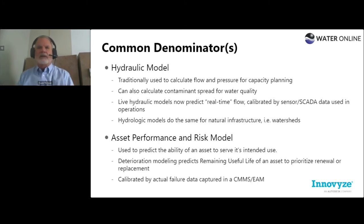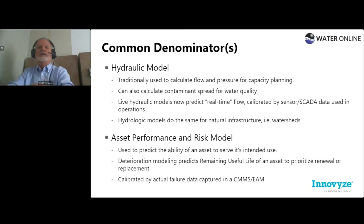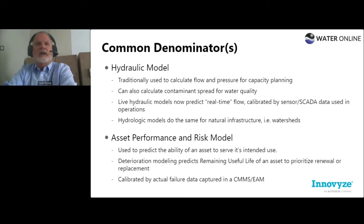Hydraulic models cover built infrastructure and pipes, while hydrologic models cover natural infrastructure — watersheds, rivers — modeling mother nature. These go hand in hand: from source to faucet, you need a hydrologic and hydraulic model to understand how to manage those systems.